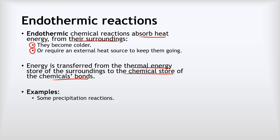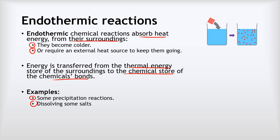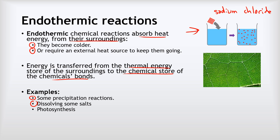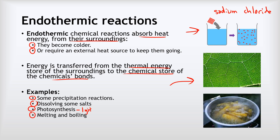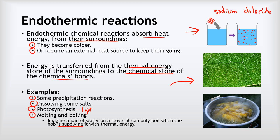Examples of endothermic reactions include some precipitation reactions and dissolving some salts. An example is sodium chloride — if you dissolve sodium chloride in water at room temperature, because it's an endothermic process, the temperature of that water will go down slightly. Photosynthesis is a super important one — we can see photosynthesis happening in this leaf here. Although it doesn't absorb thermal energy, it absorbs light energy, which still counts as an endothermic reaction. And importantly, melting and boiling. You might think a pan of water being hot must be exothermic, but to get the pan of water hot, you have to constantly supply it with thermal energy from the hob or a flame. It's only by absorbing that thermal energy from the surroundings that the pan of water can boil.